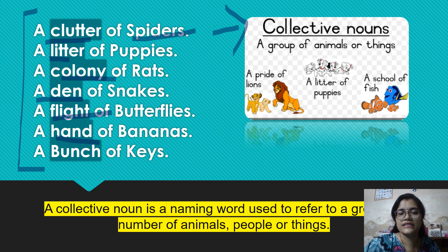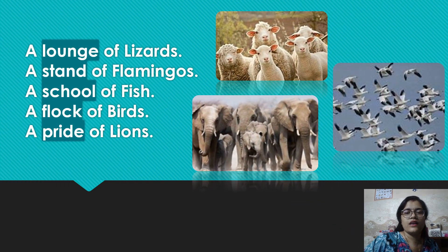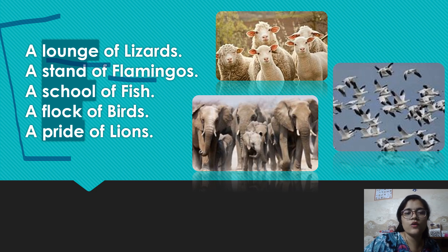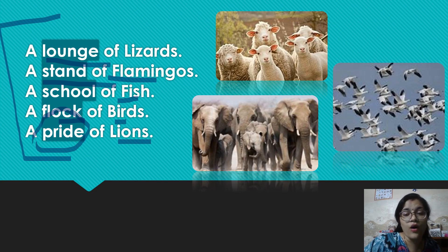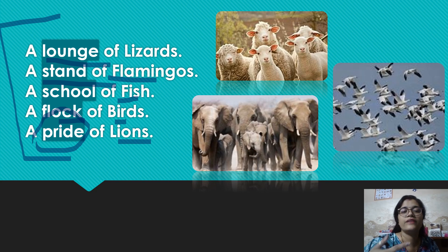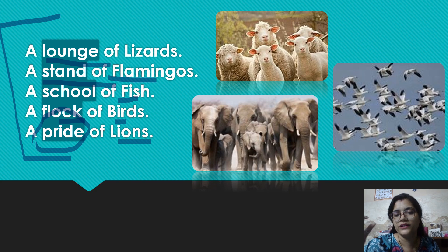Next: when a lot of keys are put together, toh usko hum bolte hain a bunch of keys. Some more examples: when we talk about a lot of lizards together, toh uske liye hum use karte hain a lounge of lizards. Flamingos ke liye: a stand of flamingos. Fish ke liye: a school of fish. Birds ke liye: a flock of birds. Lions ke liye: we say a pride of lions. So when many lions are together, then you say a pride of lions — when we have to refer to the group of something, then we use such words.